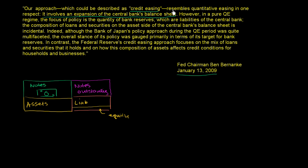So just to parse this statement: when he says credit easing resembles quantitative easing in one respect — it involves an expansion of the central bank's balance sheet — this is essentially the same thing as printing money. The Federal Reserve gets these notes into circulation by going out into the market and buying assets. Traditionally, when the Fed is more focused on short-term interest rates, on overnight borrowing rates between banks, it will use these to buy shorter-term debt. That increases the amount of dollars out there, and so it will lower the interest rate for people borrowing and lending dollars. The overnight rate for banks will go down because there's more dollars out there.